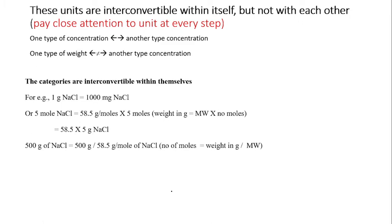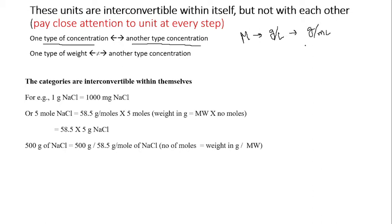The second important rule is that units are interconvertible within the same parameter type, but not between different parameters. One concentration unit can be converted to another — for example, molar can be converted to gram per liter, gram per milliliter, weight percentage, x notation, or micromolar.